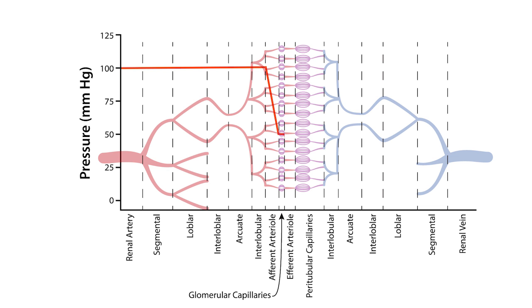The pressure then drops from 50 to 15 millimeters of mercury across the efferent arterioles. Finally, the pressure declines from 15 to about 5 millimeters of mercury across the entire renal venous system, at which point it exits the kidneys.